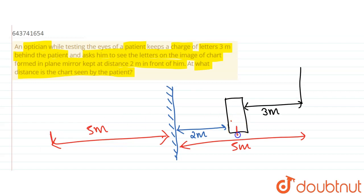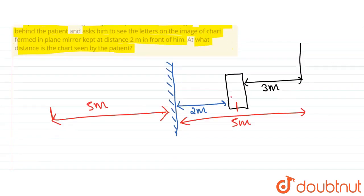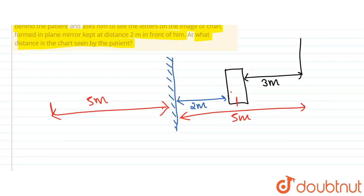So the total distance between the patient and image would be equal to five plus two, so that is equal to seven meters. Thank you.